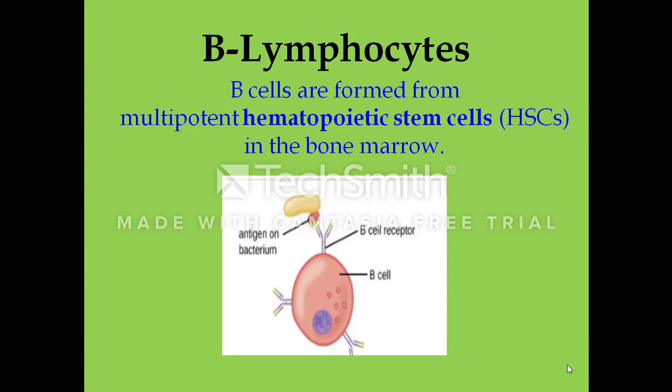B lymphocytes, otherwise called B cells, are formed from multipotent hematopoietic stem cells in the bone marrow, and follow a pathway through the lymphoid stem cell. The hematopoietic stem cell differentiates into a lymphoid cell, and from the lymphoid mother cell there is formation of lymphocytes — both B lymphocytes and T lymphocytes — from the lymphoid progenitor cell.